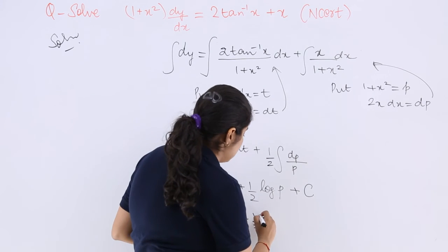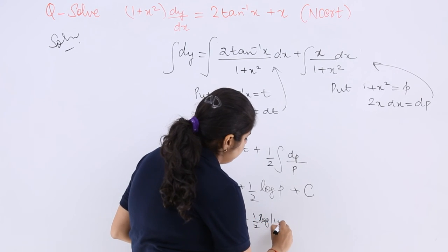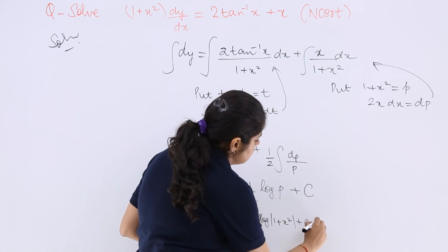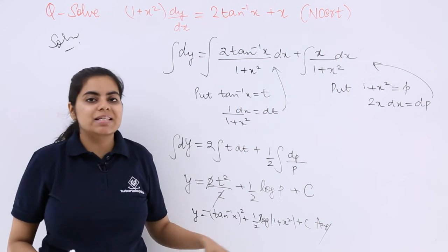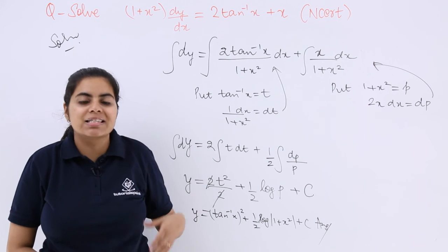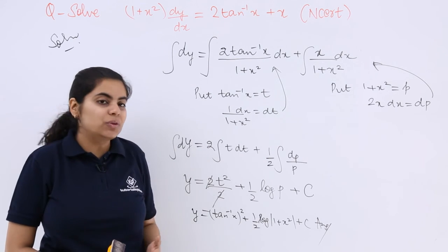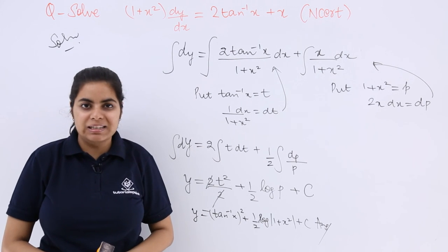p is 1+x², plus C and that should be the answer. So it already makes us clear that we cannot leave our answer in t and p. So we have to put the values and that gives me my final answer.